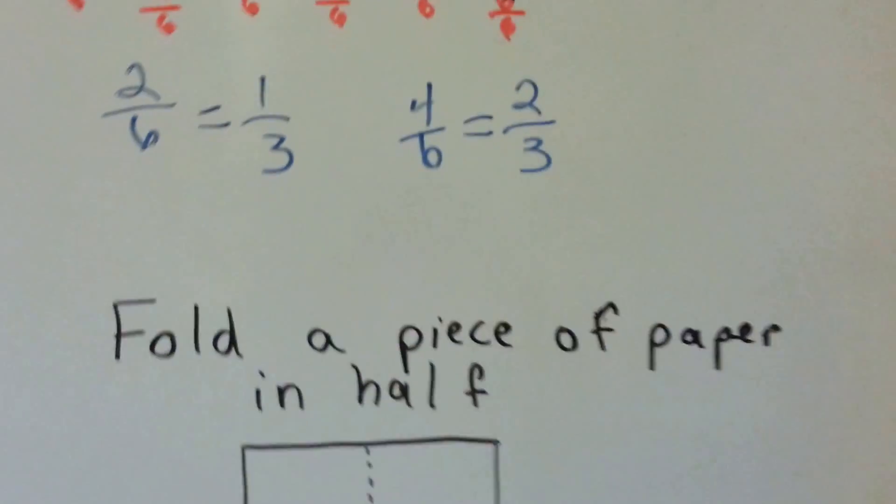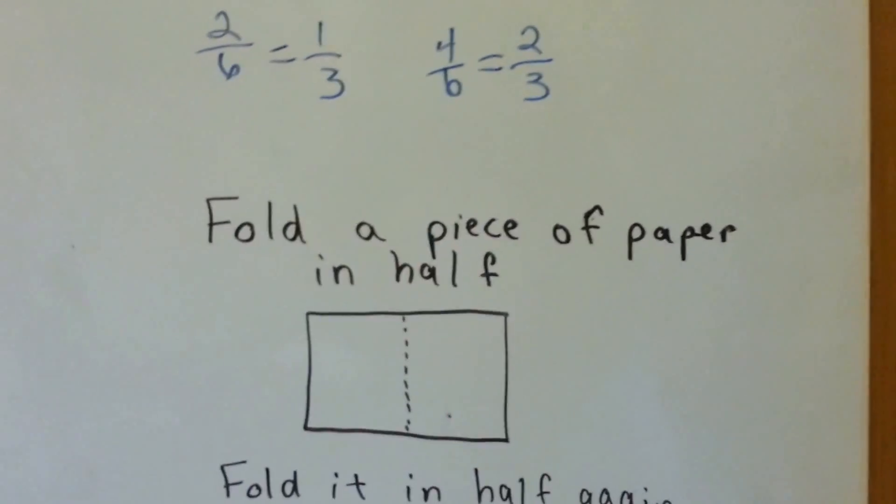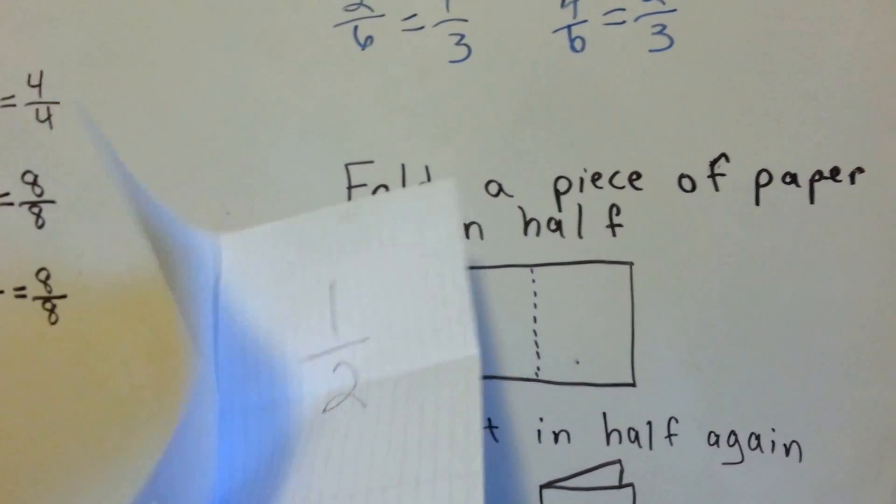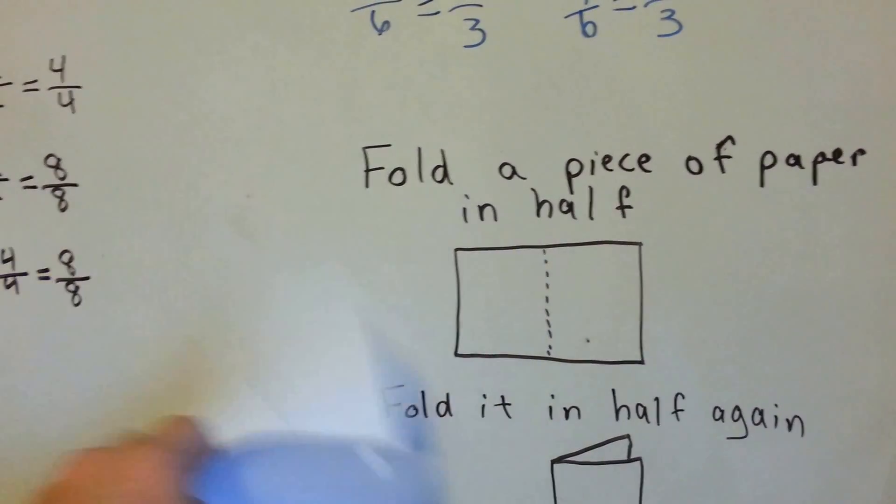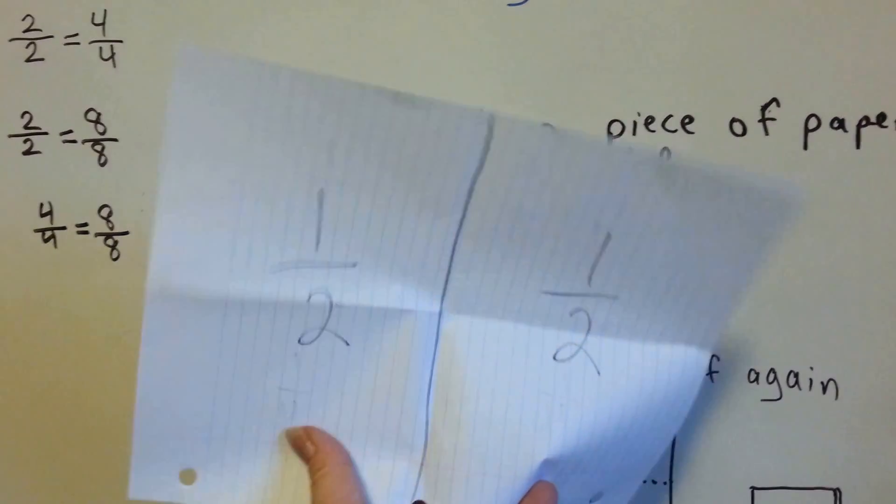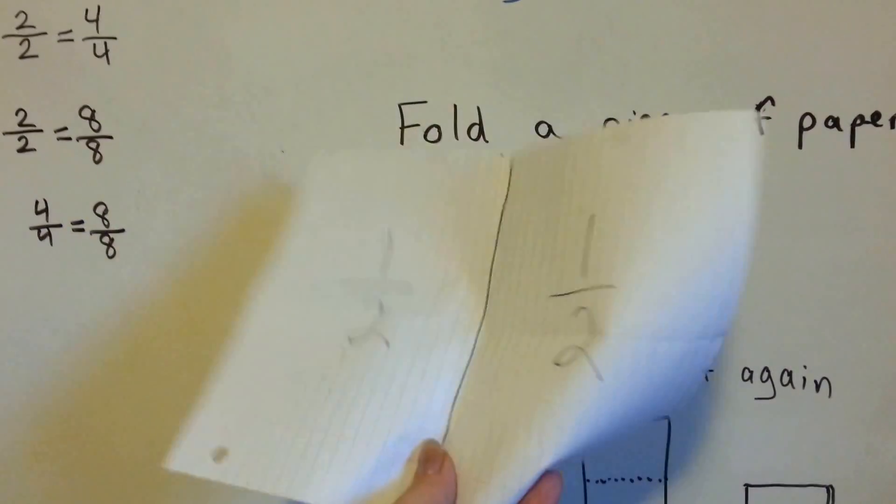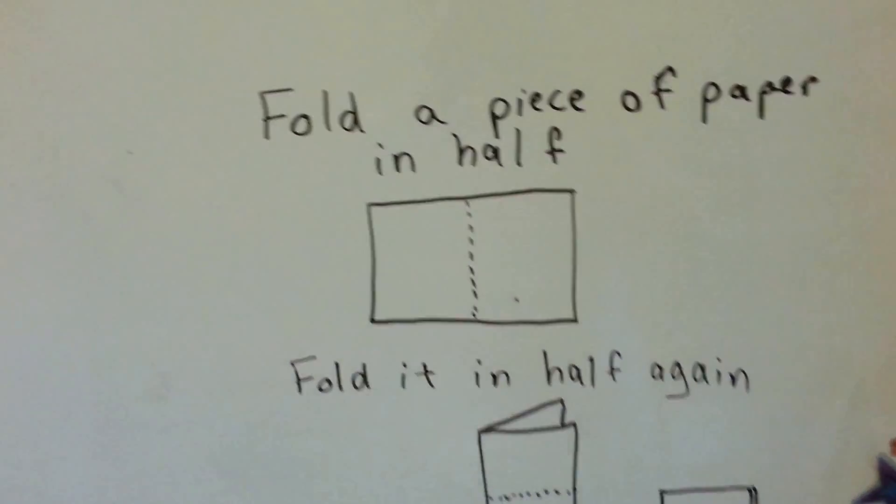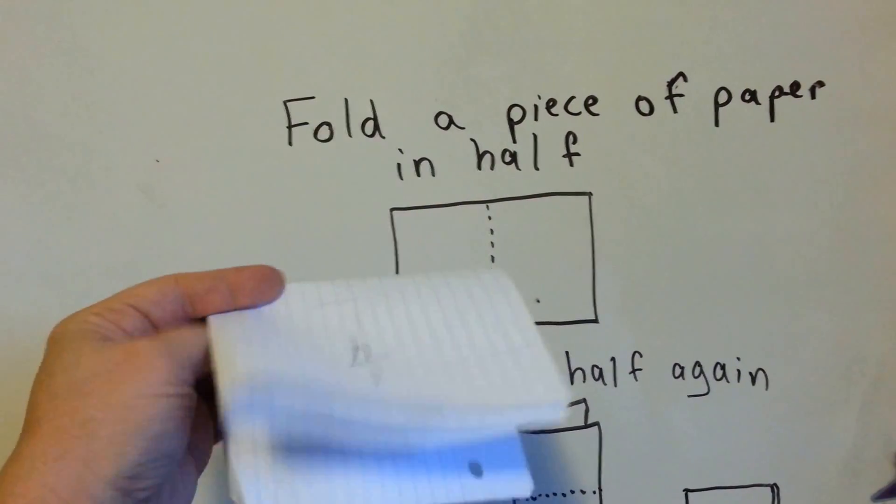So now I want you to get a piece of paper and we're going to have some fun. Just get a piece of school paper and I want you to fold it in half. Just fold it in half like that. And then you'll have half on one side and half on the other. So if you take this piece of paper, fold it in half, and we fold it again.